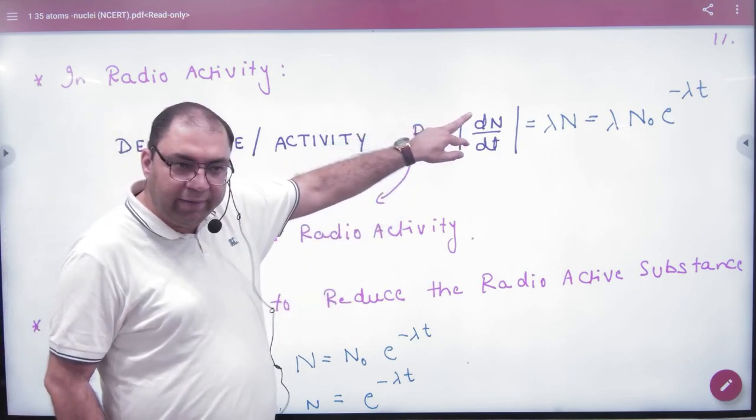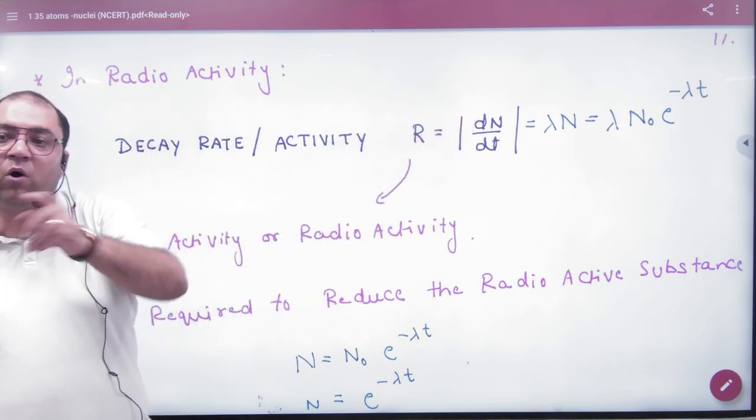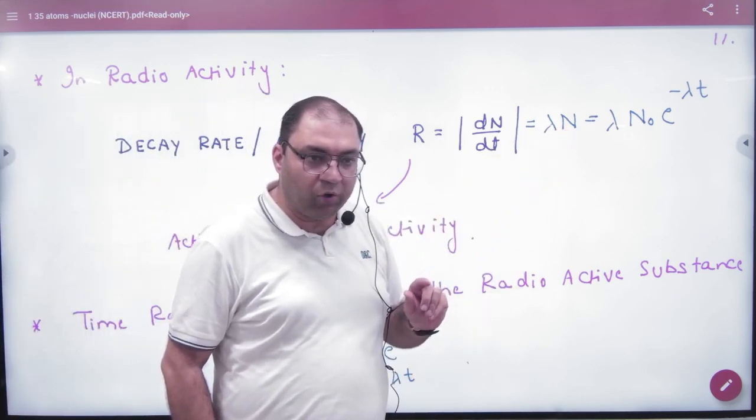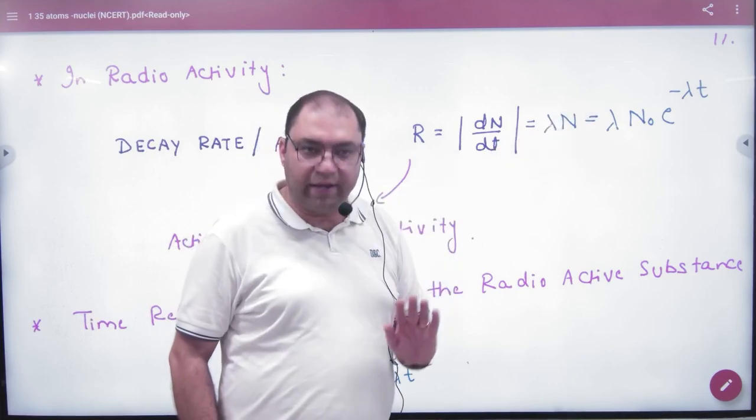So R is equal to dN by dt. But from the law of radioactivity, dN by dt is equal to lambda into N. And the value of N was N₀ e to the power minus lambda t.